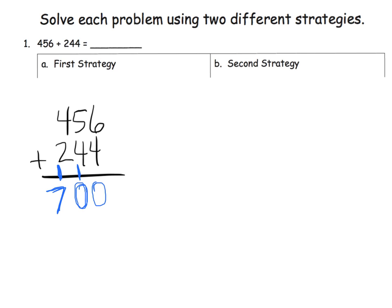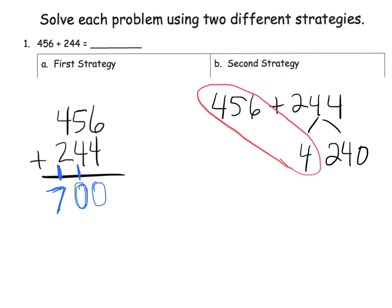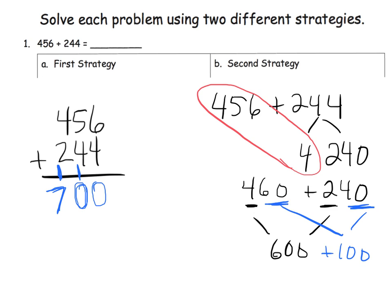Let's see if we could come up with a second strategy. I think a second strategy might be, 456 plus 244. One way might be I can decompose this to 4 and 240. And I did that because if I add this together, that gives me 460 plus 240. I can see that 400 plus 200 equals 600. And then I can see that 60 plus 40 equals 100. And if I add those two together, 600 plus 100 gives me 700.